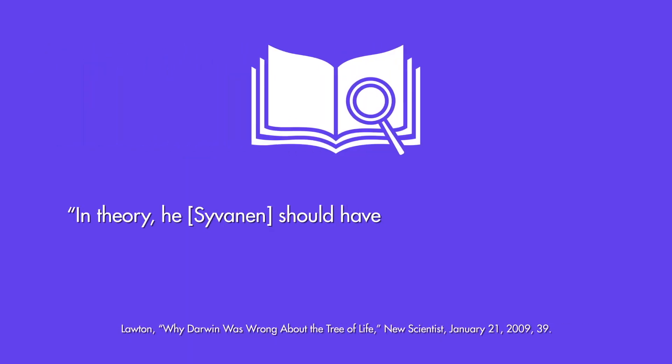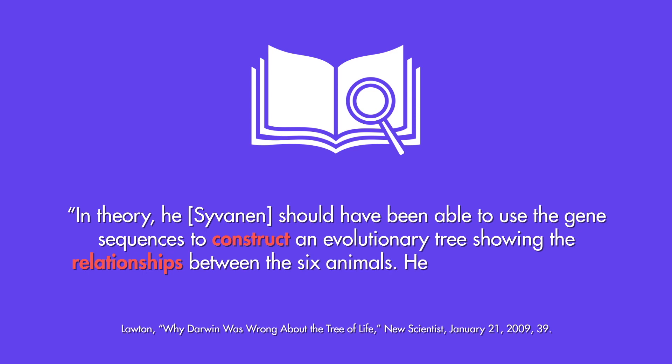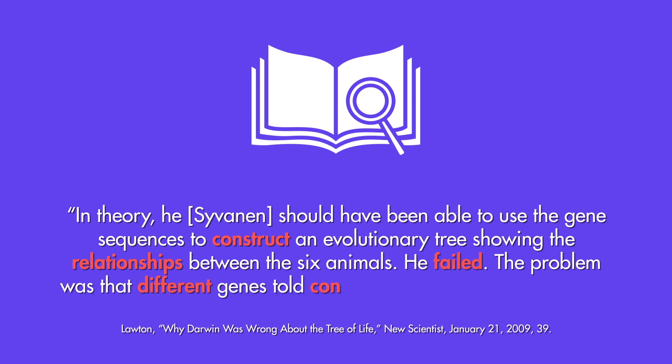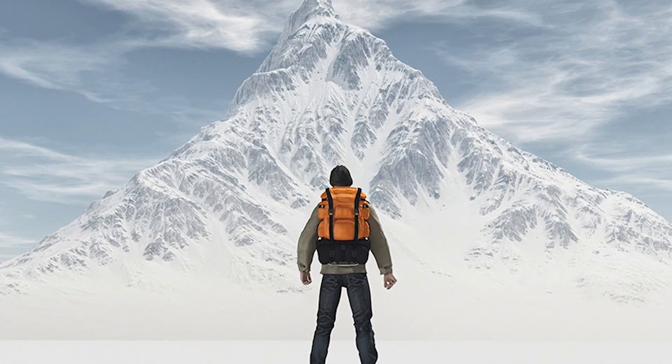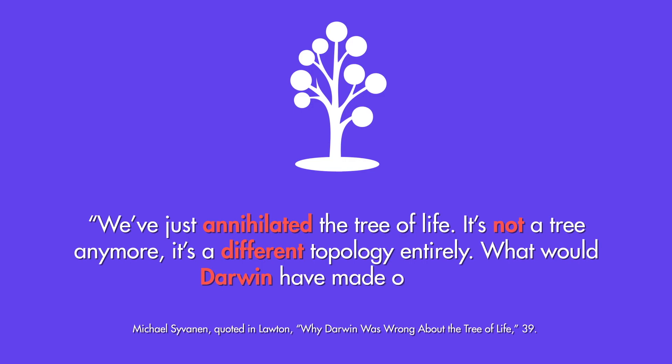For example, biologist Michael Sivanen compared no less than 2000 genes in six animals from various phyla. Given the breadth and depth of his project, one would have expected this one study to yield one account of evolutionary history — one tree of life. However, here is what the New Scientist reported: 'In theory, he should have been able to use the gene sequences to construct an evolutionary tree showing the relationships between the six animals. He failed. The problem was that different genes told contradictory evolutionary stories.' Not only did Sivanen have no problem admitting his failure, but he also moved on to challenge the Darwinian paradigm itself by saying: 'We've just annihilated the tree of life. It's not a tree anymore. It's a different topology entirely.'